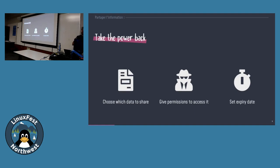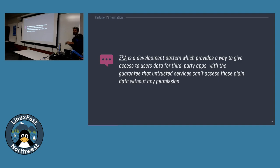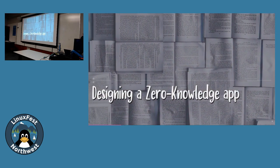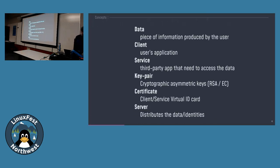This is exactly what zero knowledge architecture is built for. Its main goal is just to let you choose which data you want to share, with who, and for how long. In fact, this is just a technical pattern that inherits from many core concepts and ensures that the user can't share their data with untrusted third parties. So how do we design a zero knowledge application and how can we use it every day?